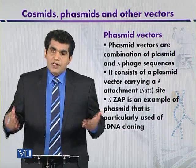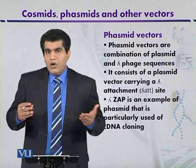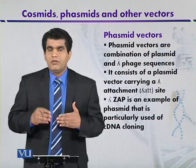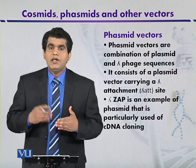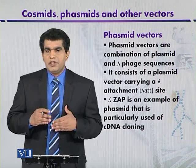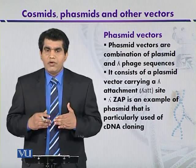With reference to selectable markers, lambda ZAP contains genes for the synthesis of beta-galactosidase. When foreign DNA is inserted within the gene that synthesizes beta-galactosidase, the gene is inactivated — this is called insertional inactivation. If there is no production of beta-galactosidase, it means the foreign DNA has been successfully inserted.